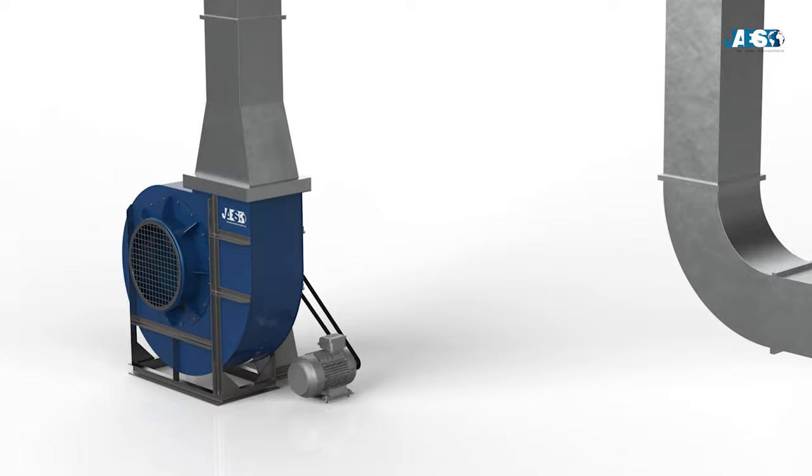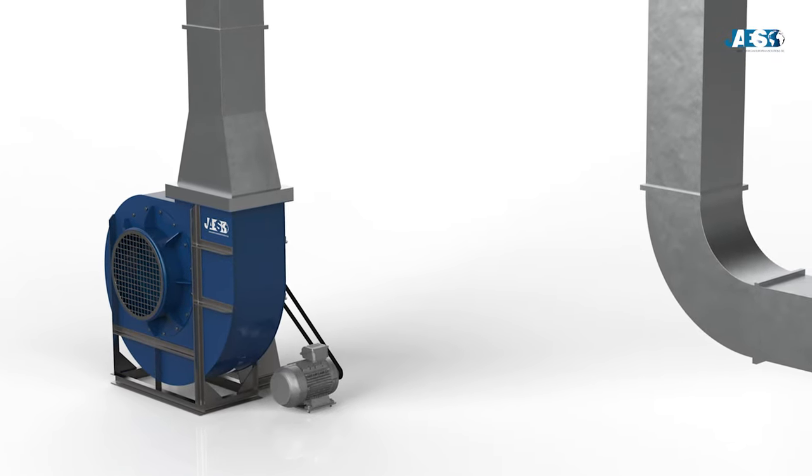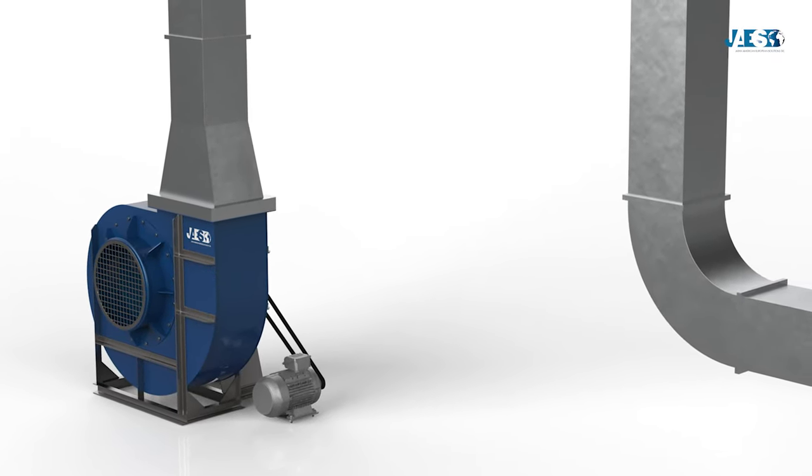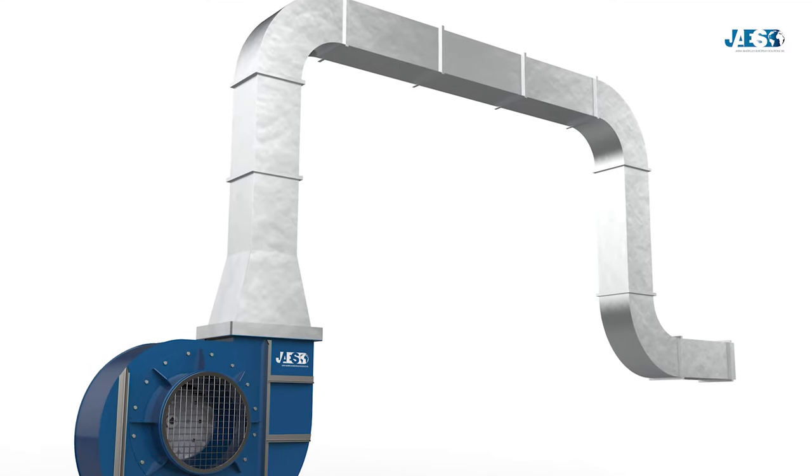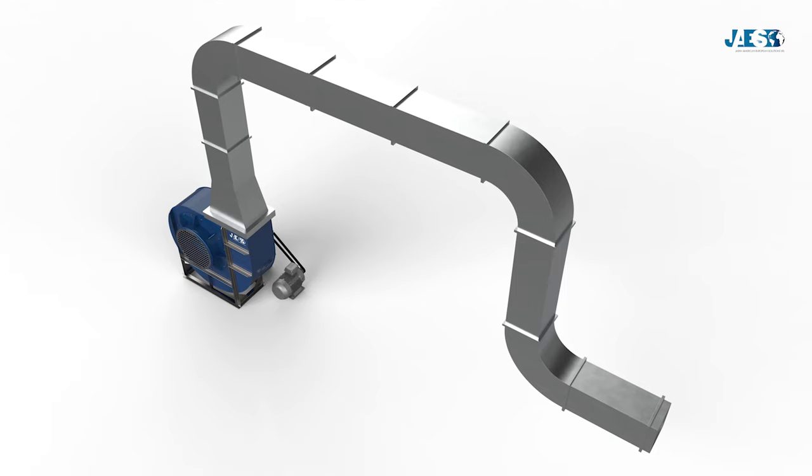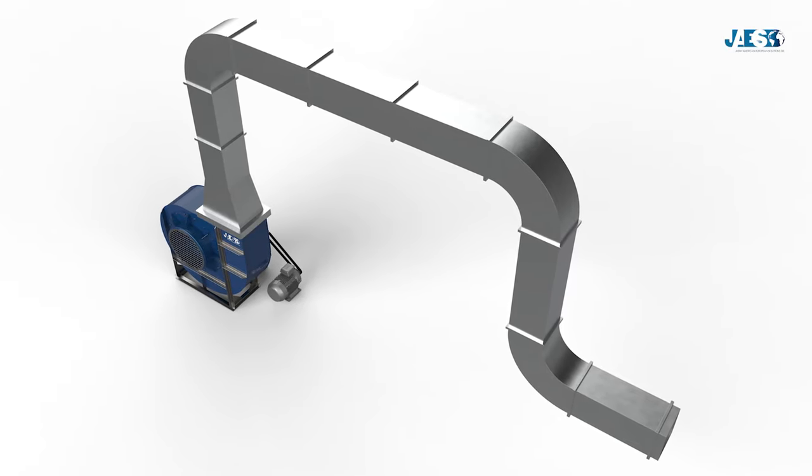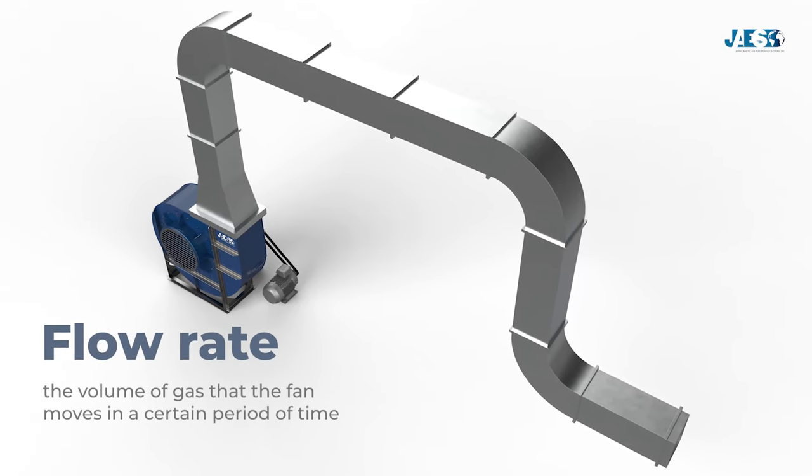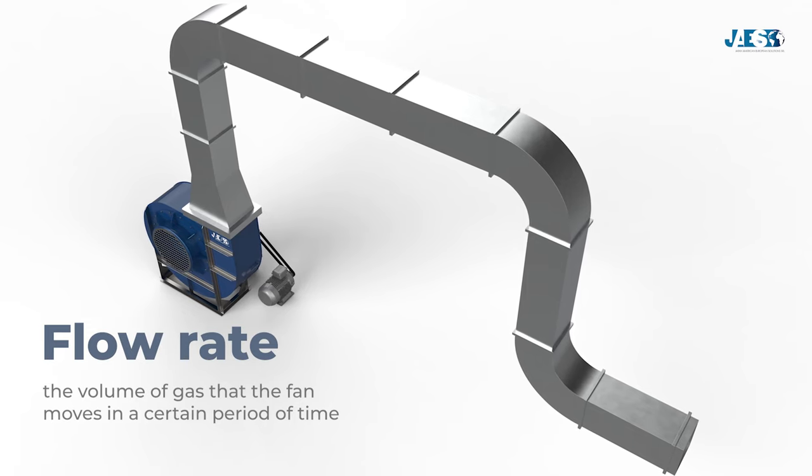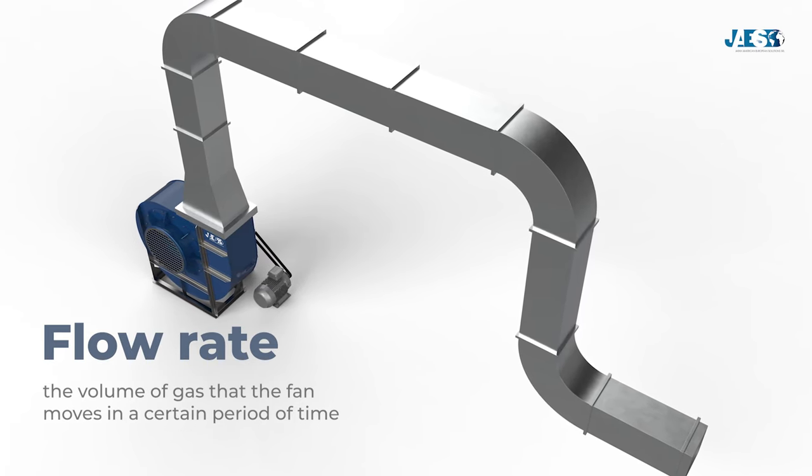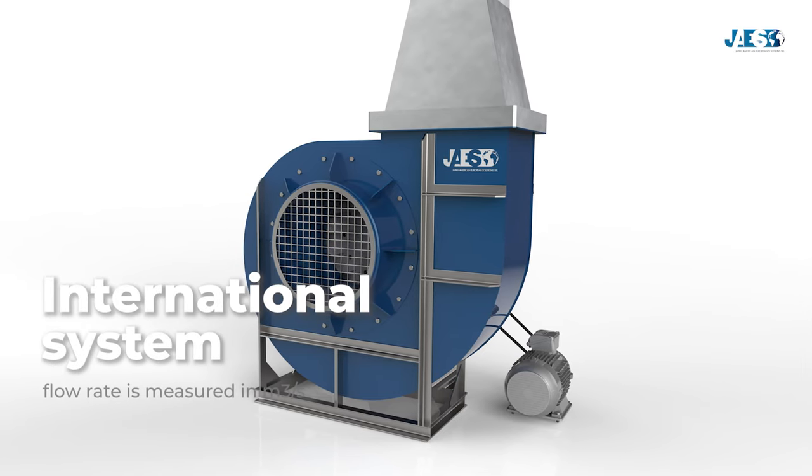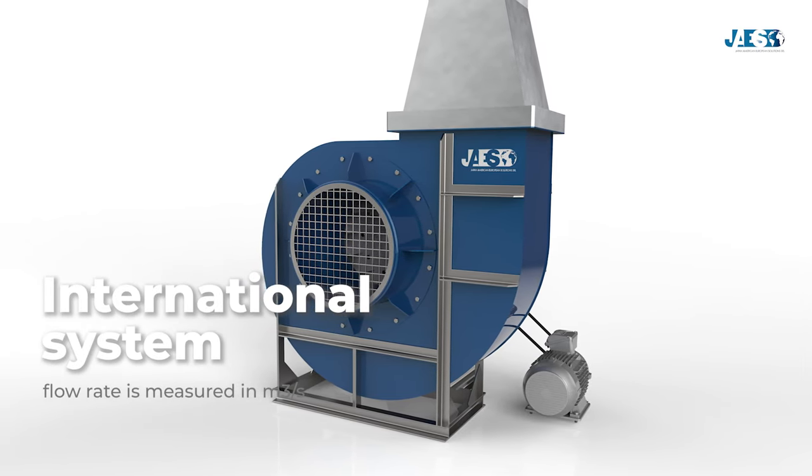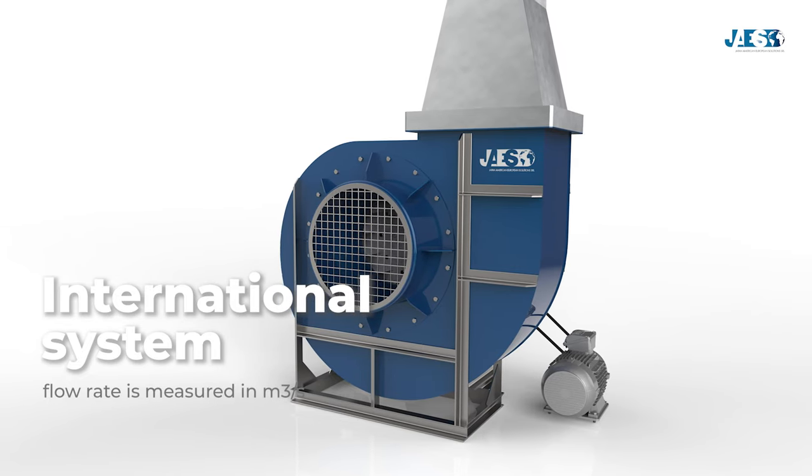With an industrial ventilation system installed, there is an important feature to take into account. That is, how much gas do we want in our plant to carry? To know this value, we have to calculate the flow rate of our plant, namely the volume of gas that the fan moves in a certain period of time. In the international system, flow rate is measured in meters squared per second.